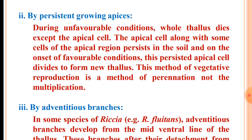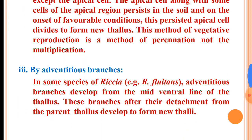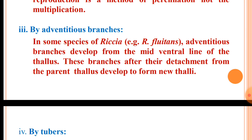The second method is by persistent growing apices. During unfavorable conditions in certain species of Riccia, all the cells of the thallus die except the apical cell and certain cells of the apical region. This persisted apical region, on the onset of favorable conditions, divides and develops to form a new thallus. The third method is by adventitious branches, which originate from the mid-ventral line of the thallus — for example, in Riccia fluitans. These branches, after detachment from the parent thallus, develop to form a new thallus.